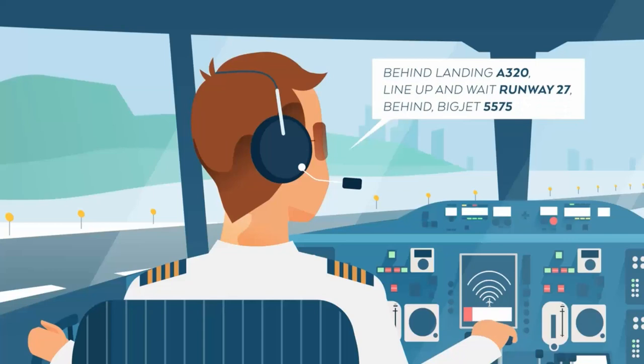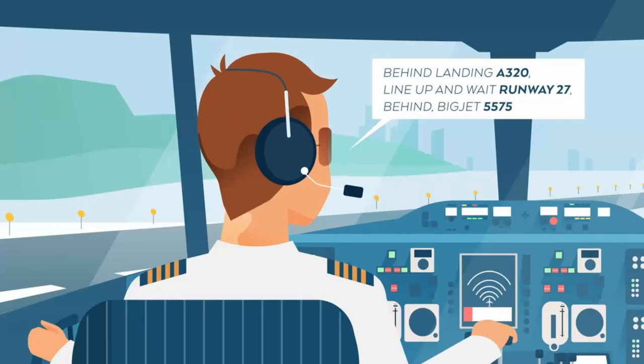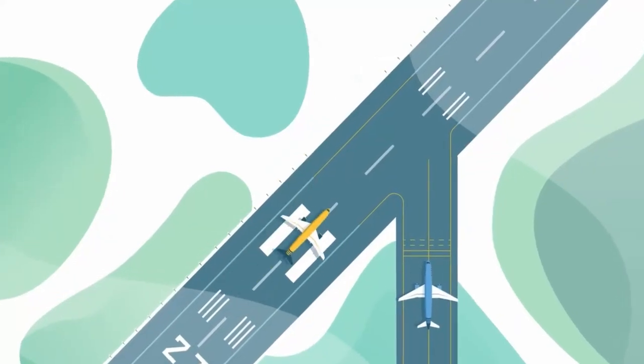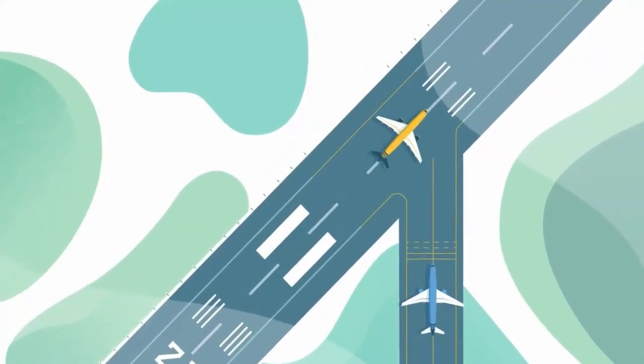Behind landing A320, line up and wait runway 27 behind Big Jet 5575. A short while later, an aircraft passes in front of Big Jet 5575 on the runway.